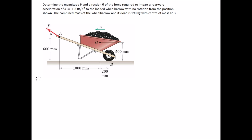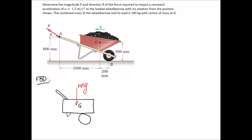Starting with the free body diagram, we need to identify all the forces acting on this wheelbarrow. First, we have the weight of the wheelbarrow acting down through the center of gravity — we'll call it mg, applied through that point. Next is the force due to contact with the ground, which is perpendicular to the surface, so it's vertical — we'll call it N. The only other force is the one applied to the handle, which is P, at an angle theta, and these are the values we're trying to determine.